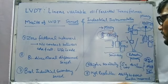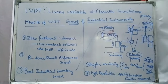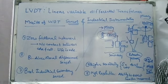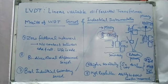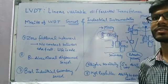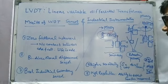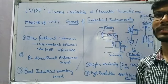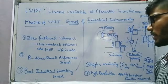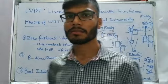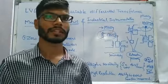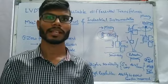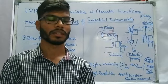Moving to further merits of LVDT: it has higher sensitivity of 40 volts per mm. Higher sensitivity means that even small variations in displacement generate a higher output voltage, since sensitivity is the rate of change of output divided by rate of change of input. The final merit is higher resolution — the ability to detect smaller increments. Because sensitivity is high, LVDT can detect even very small displacements.